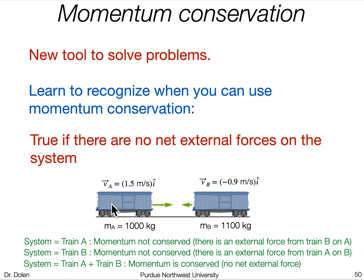If I were to just consider train A alone, momentum is not conserved for train A, because B is going to apply a force to it — there's going to be an impulse from B on A that changes the momentum of A. Its speed will definitely change, so its momentum is not constant. Same with B — the momentum of B is not conserved because A is going to hit it, and B is actually going to switch directions after the collision. We have to be careful about how we define our system. If you can recognize that the net external force on the system is zero, then momentum is conserved.